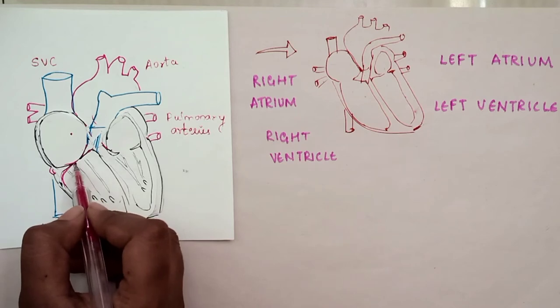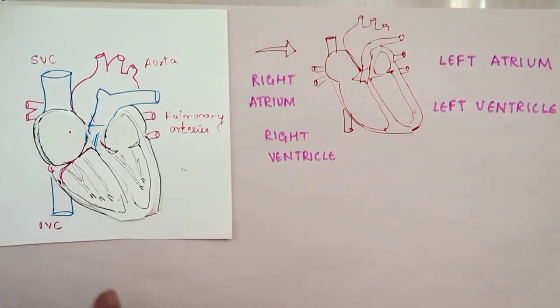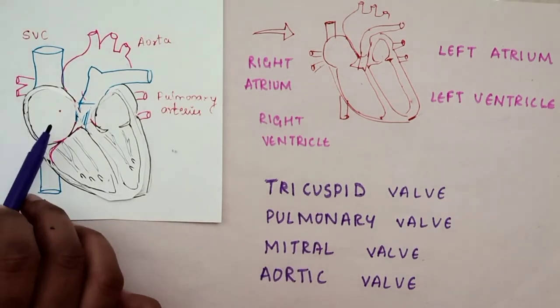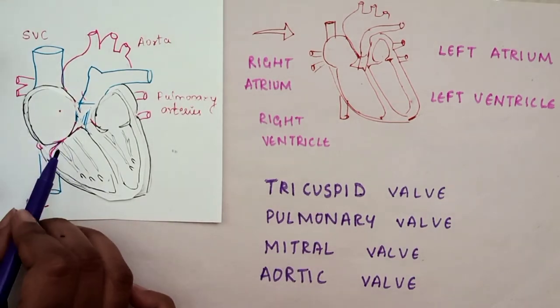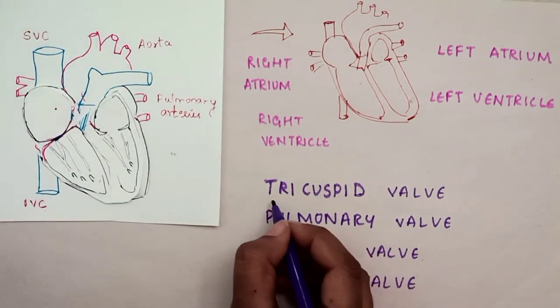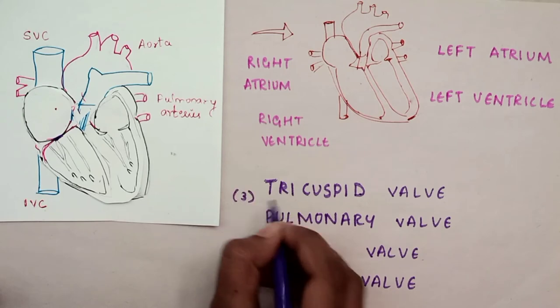The heart has four valves. The tricuspid valve is between the right atrium and right ventricle. It's called tricuspid because it has three cusps or flaps.